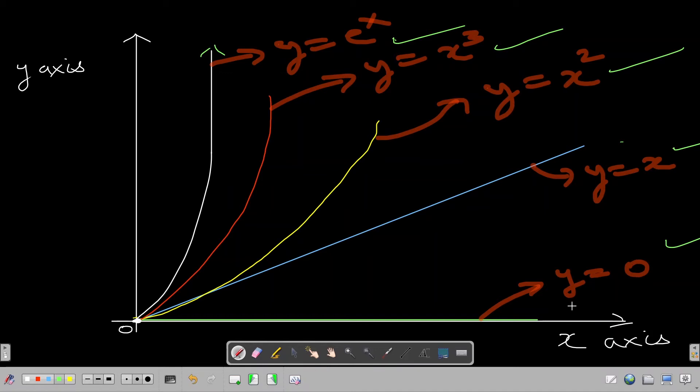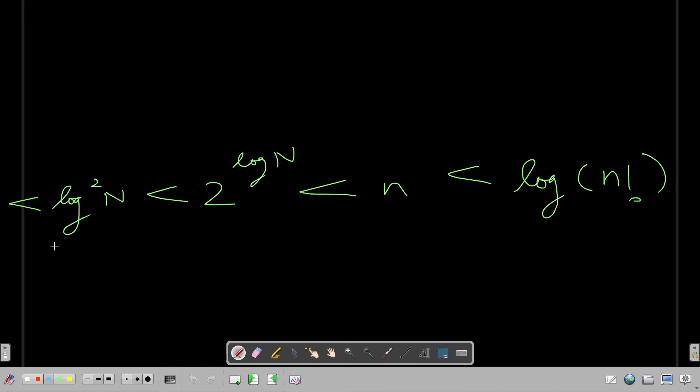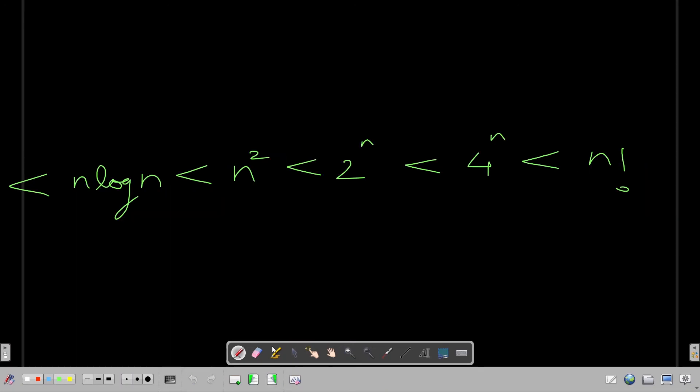Sometimes logarithmic and exponential could make things a bit tricky, so I have written their relative ordering in the next slide. This is the best time complexity: O of 1, then comes O of log of log of n, then comes O of square root of log of n, then comes O of log of n, then comes 2 raised to power log of n, then comes O of n, then comes O of log of n factorial, then comes O of n log n.